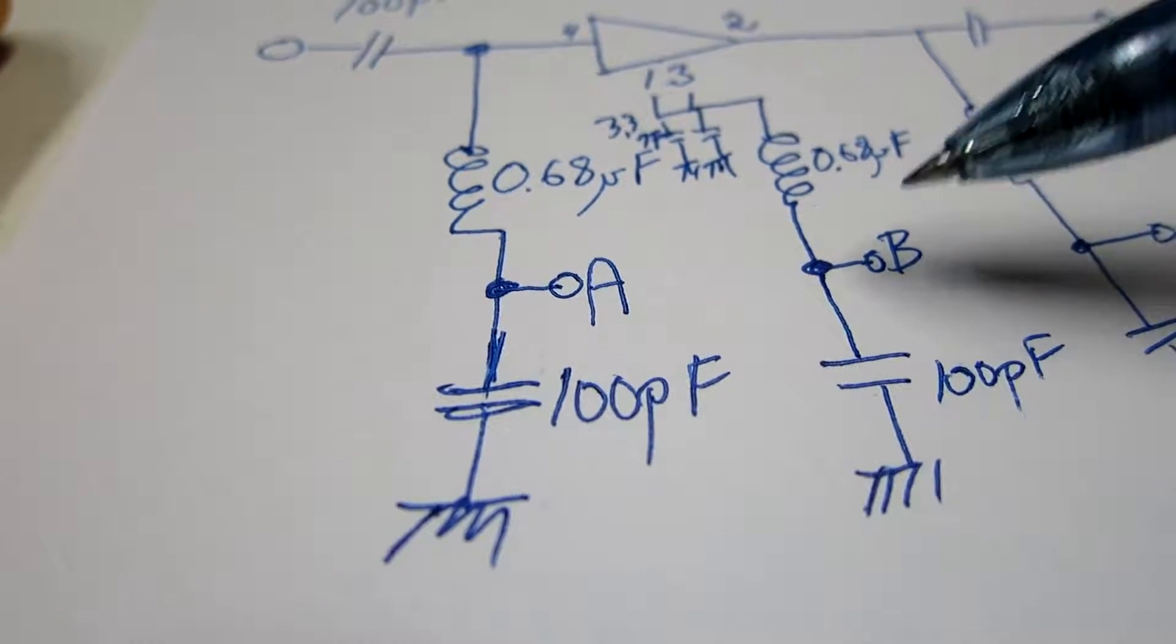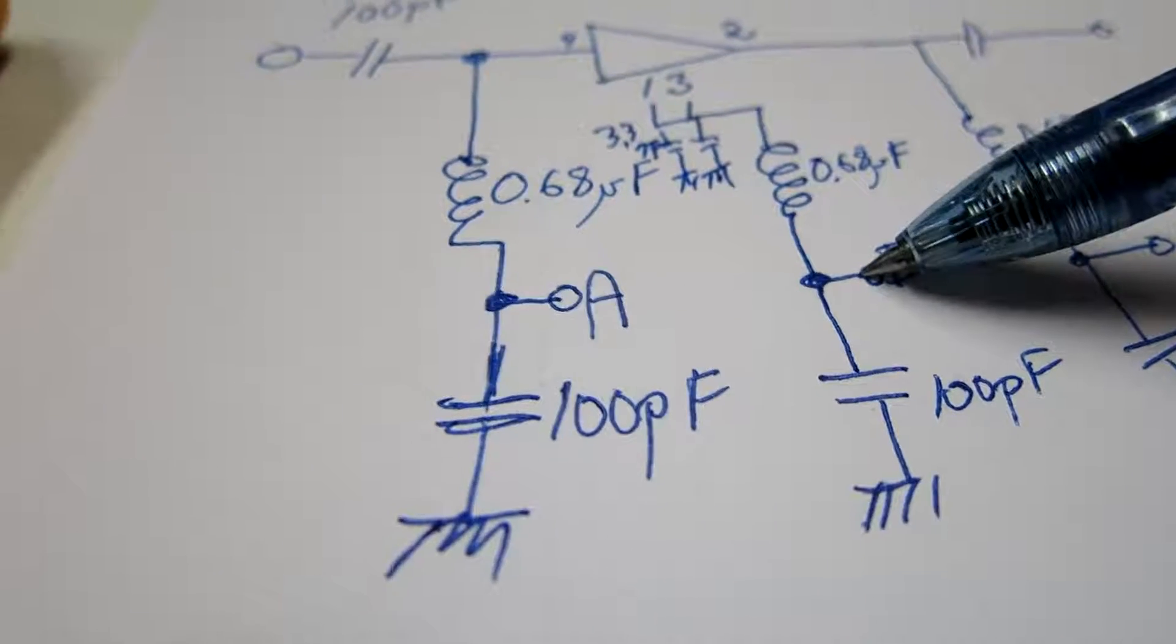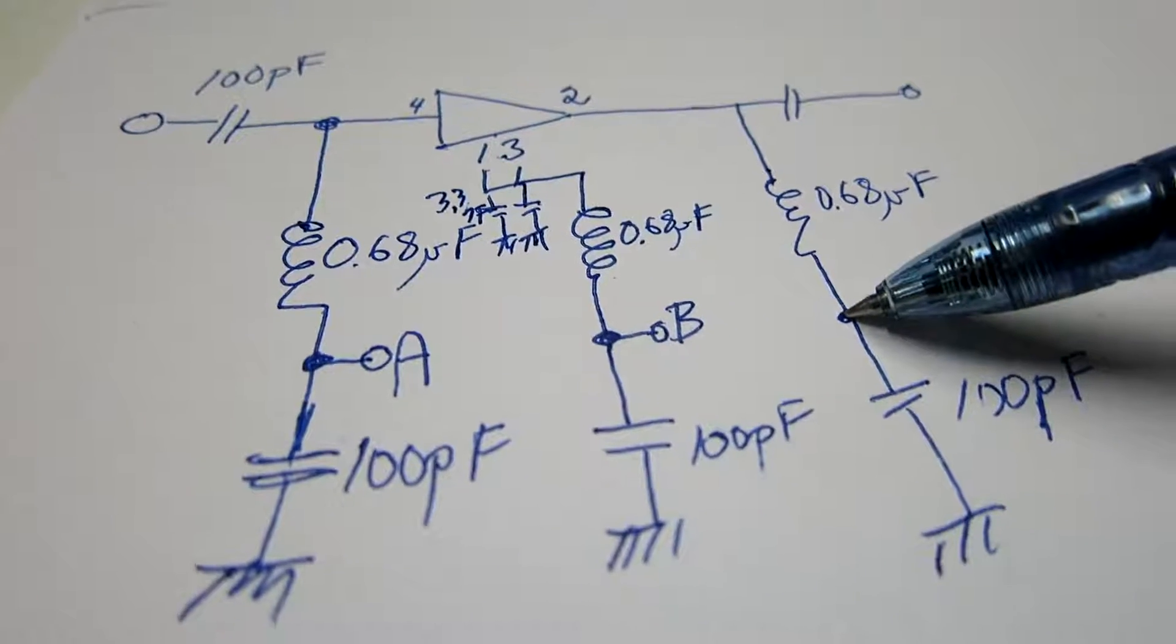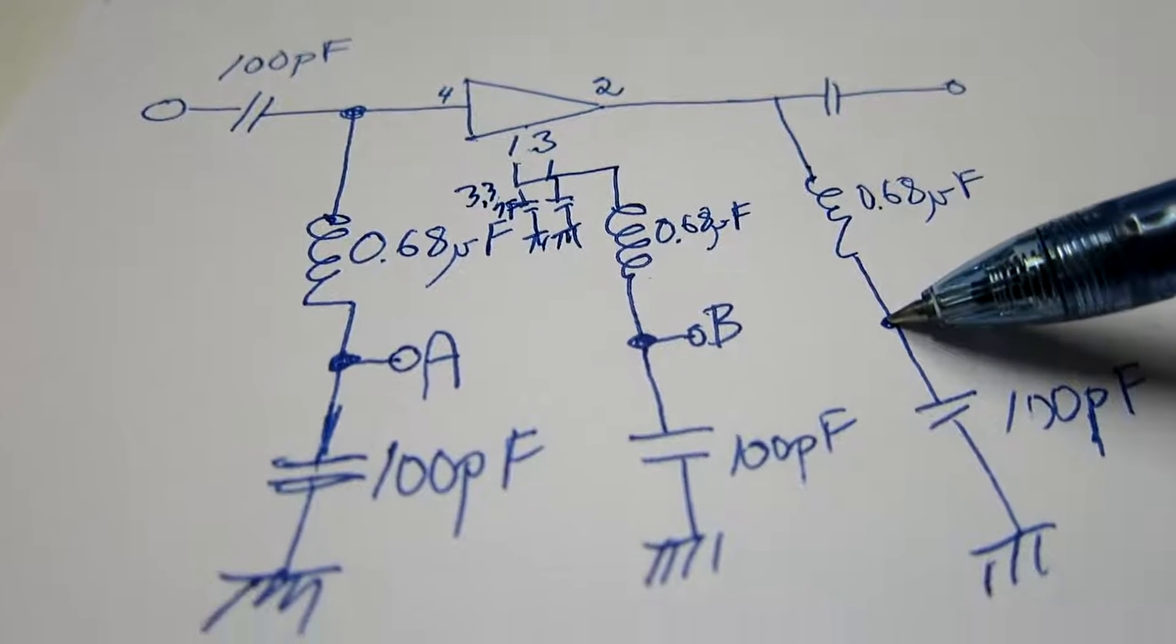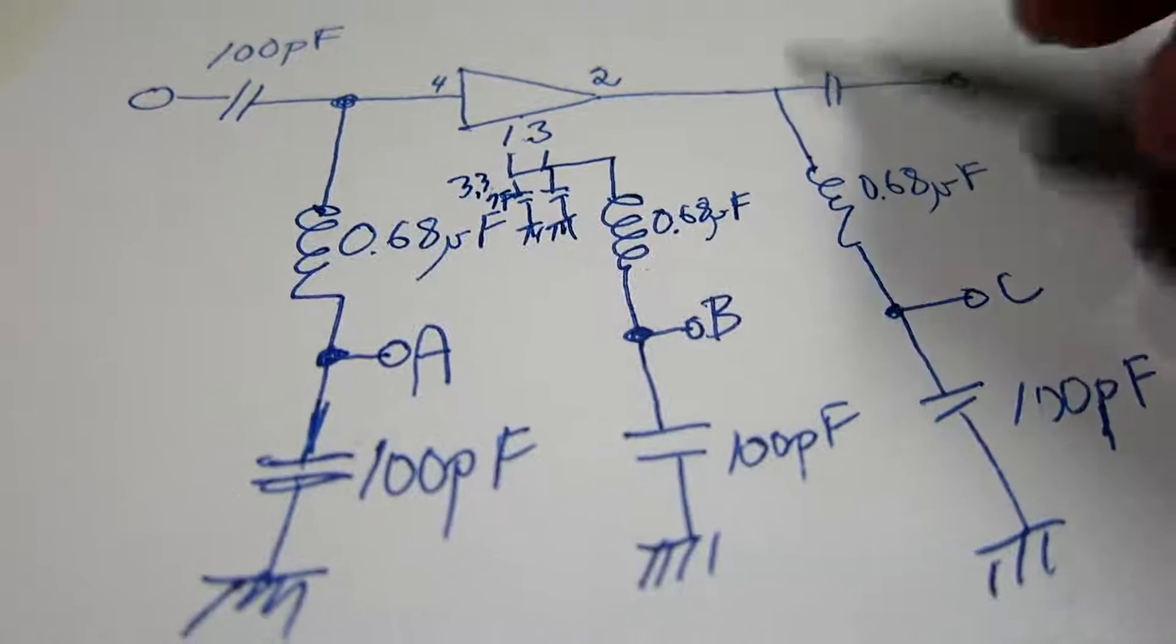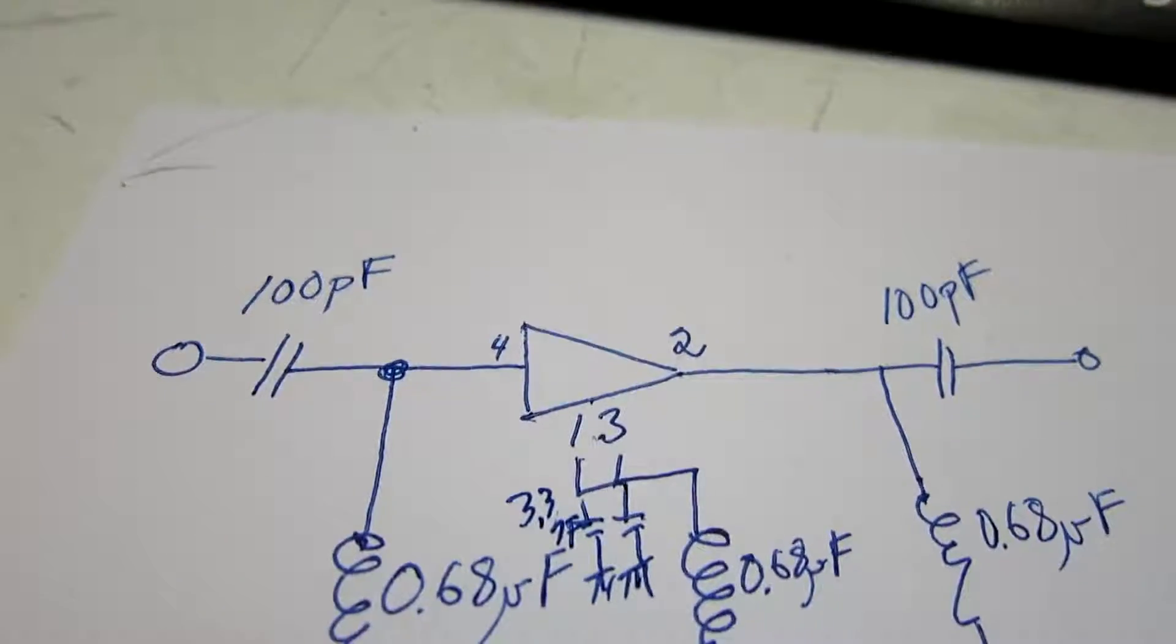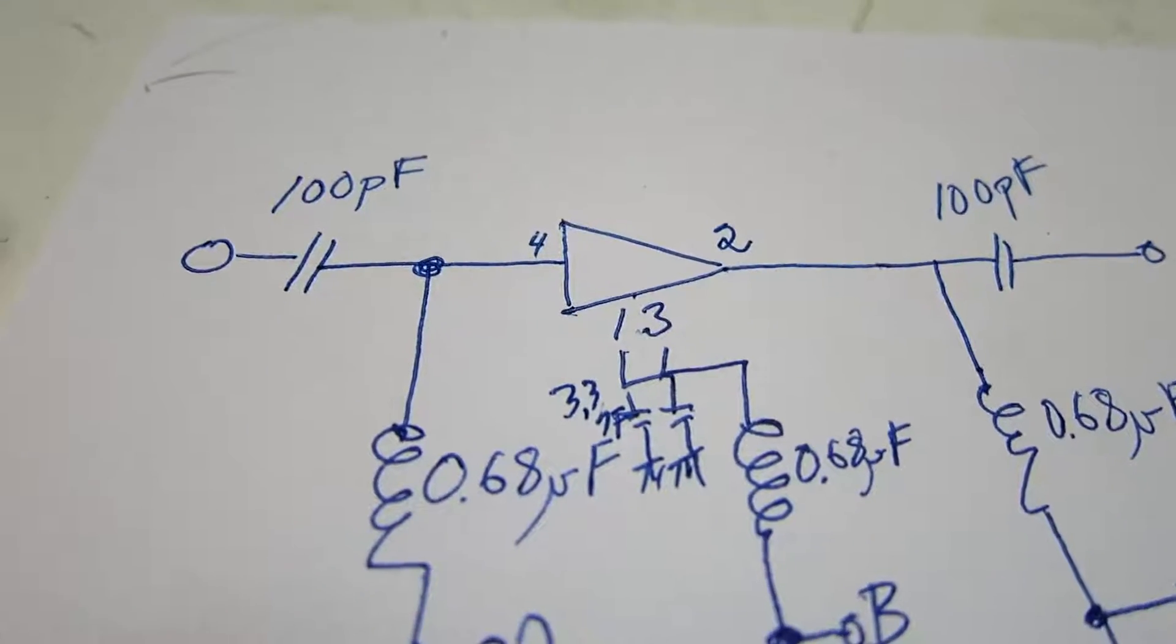So I have the ground here, the input here, and the output here for low frequencies. And for radio frequencies, it is just 100 pf on both ends.